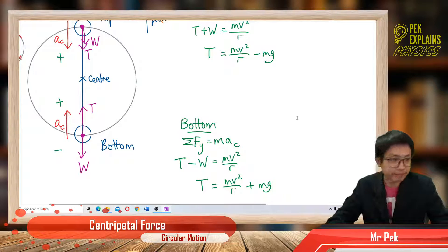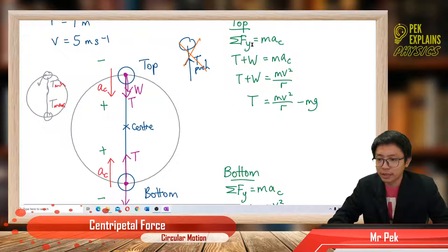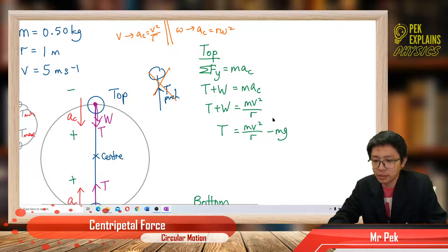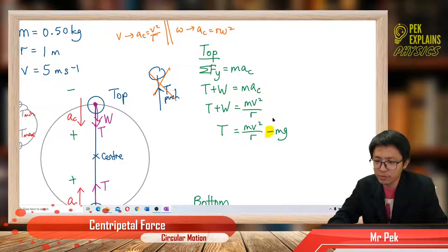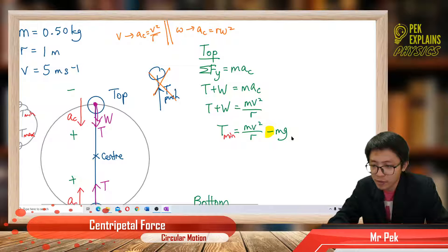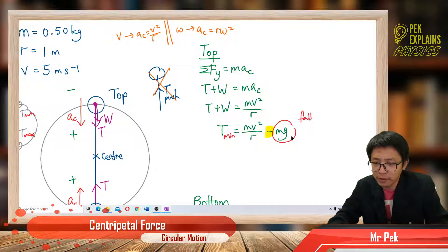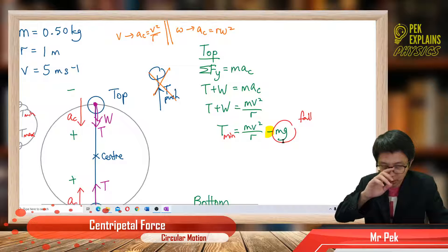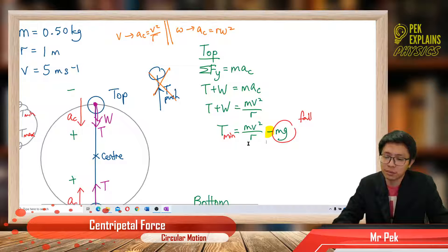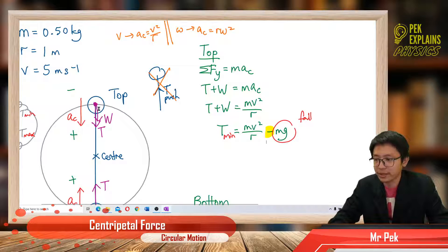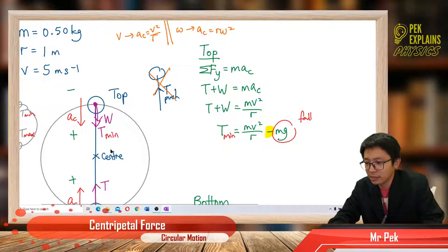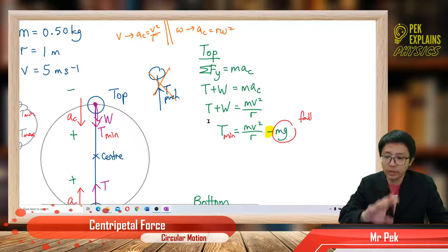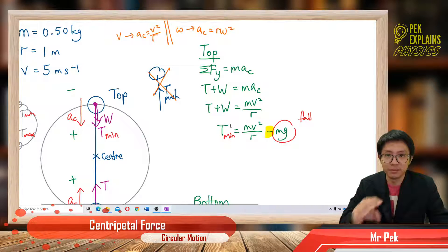Can you see the difference? At the top position, it is minus MG. When MV squared over R is minus by MG, it becomes the minimum tension. The object is trying to fall down, which makes the string less taut — that's why tension is minimum at the top, proven by the equation. Always build equations to prove something, don't just say it.